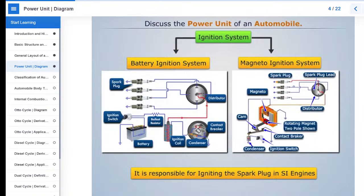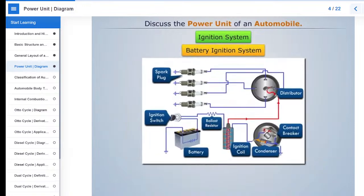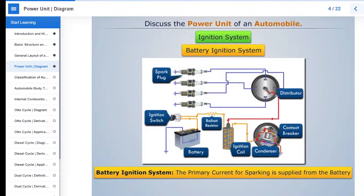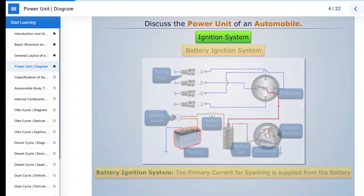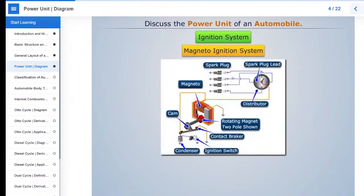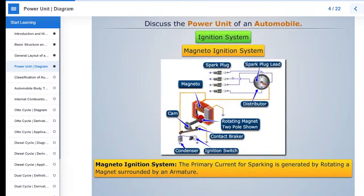Magneto ignition system. In battery ignition system, primary current for sparking is supplied by a battery. Whereas in magneto ignition system, primary current for sparking is generated by rotating a magnet, surrounded by an armature.